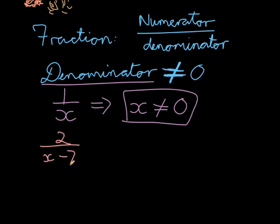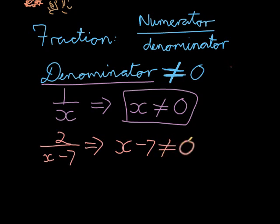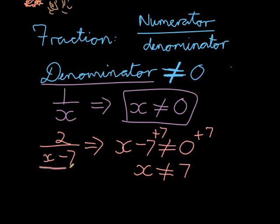If I have 2 over x minus 7, I'm trying to find my domain. My denominator is x minus 7, so x minus 7 may not equal zero. It's like a normal equation but with a not-equal sign. If I add 7 on both sides to solve it, I see that x may not be 7. And it makes sense: if x is 7, I have 7 minus 7, which is zero, and the denominator may not equal zero.